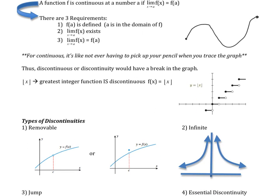You can have continuity on an interval or for the whole graph. If we have the greatest integer function and graph it, we get a step function. This step function is not continuous, because to go from one step to the next I have to pick up my lightsaber. So if you cannot trace it without picking up your pencil, then it is not continuous. If it's not continuous, we say it's discontinuous — there's a discontinuity, a break in the graph.